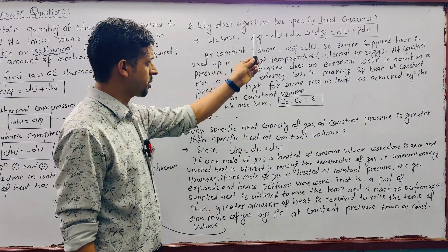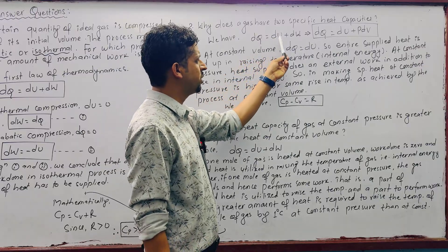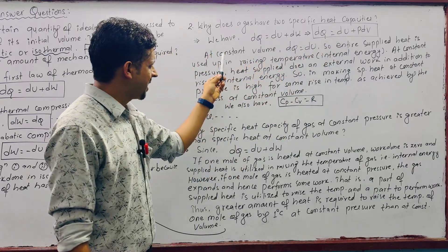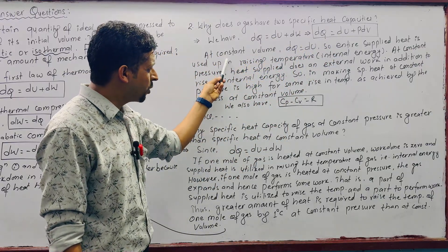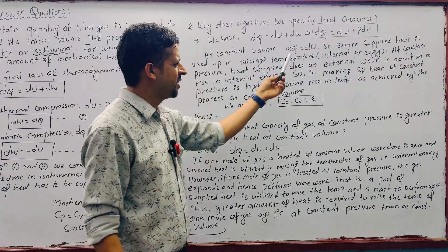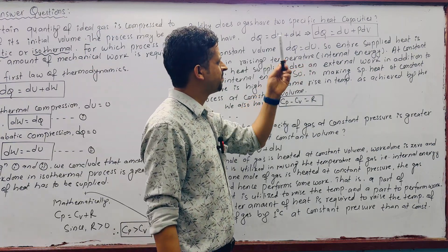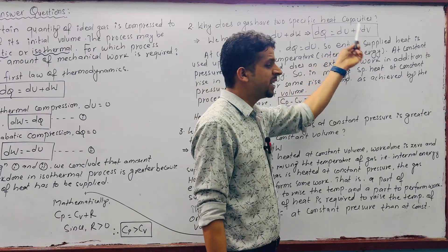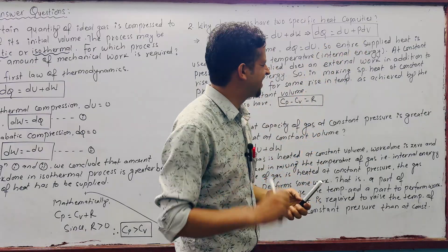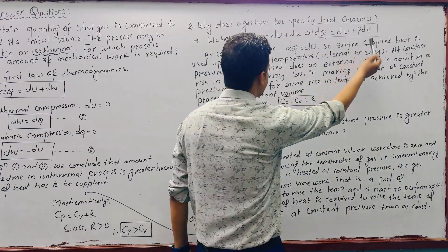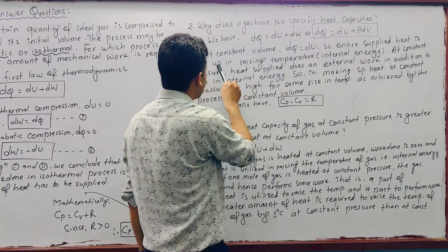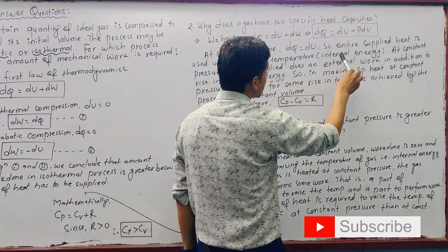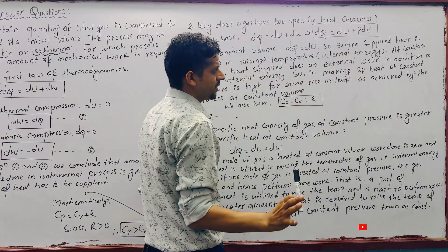From the first law of thermodynamics, dQ = dU + dW = dU + PdV. At constant volume, dQ = dU since PdV = 0. So the entire heat supplied is used in raising the temperature, i.e., increasing the internal energy.